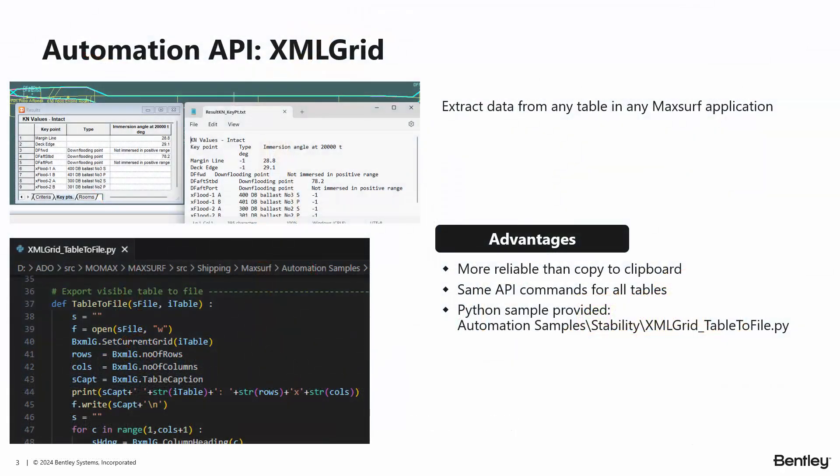We've added an automation interface called XML Grid, which allows you to extract data from any table in any MacSurf application. It's more reliable than using copy to clipboard. The same API is used for all the tables, and we have a new sample in Python to show you how it's used.